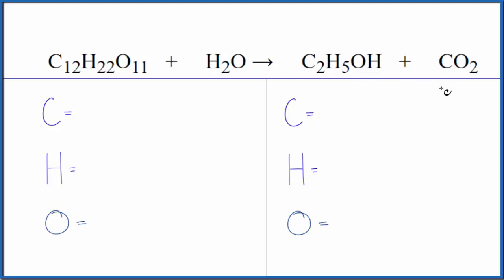Just see what happens. So we have 12 carbons, 22 hydrogens here plus we have the two out here, so we have 24 hydrogen atoms. Oxygens we have 11 here plus we have one in oxygen so we have 12.